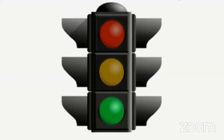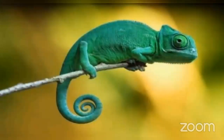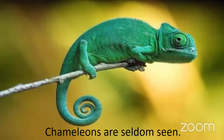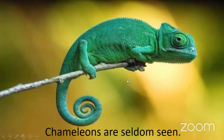So students, I hope that you have enjoyed this poem — isn't it interesting? The poet says that chameleons are seldom seen; they are red, they are orange, they are green. They are one of nature's strangest sights. Their colors change like traffic lights. This poem is written by Colin West. Chameleons are seldom seen — that means chameleons are very rarely seen animals. You cannot see a chameleon very easily. Have you seen this animal before? I have not seen this animal before. It looks so strange.